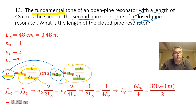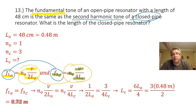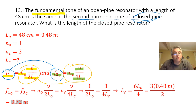Solving for the length of the closed pipe gives: length of closed pipe equals 6 times the length of the open pipe divided by 4. Plugging in 0.48 meters for the open pipe length gives a length of 0.72 meters for the closed pipe.